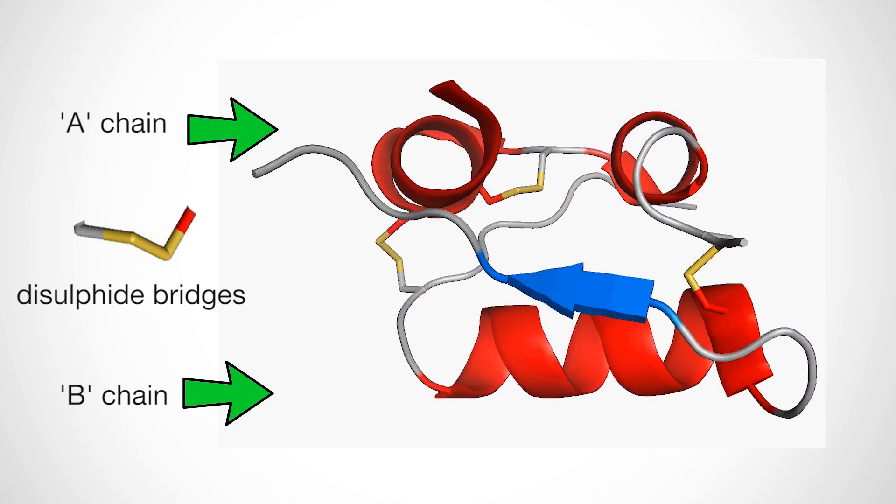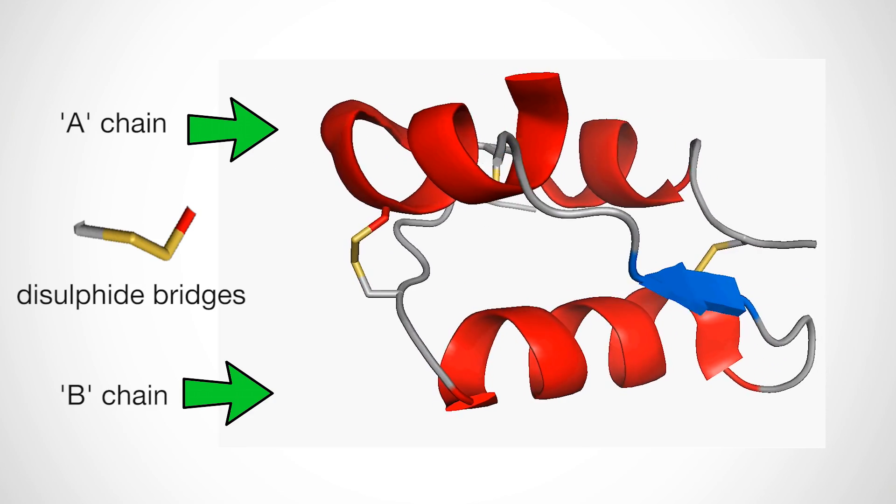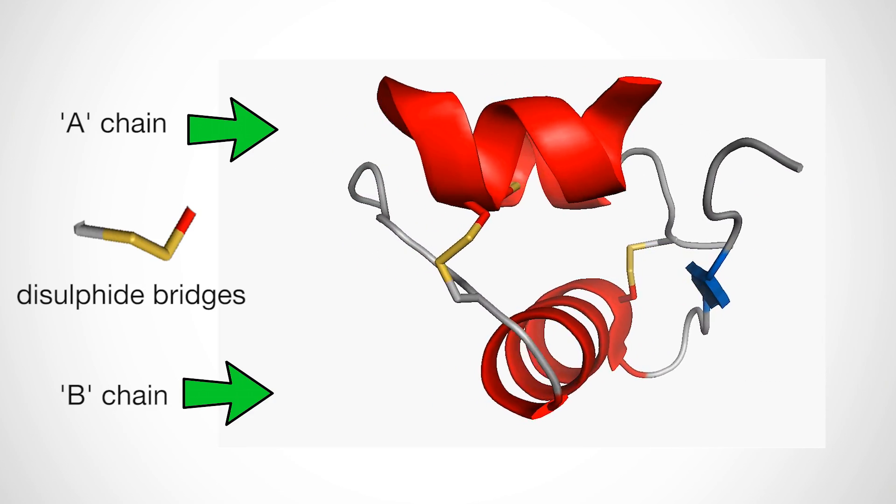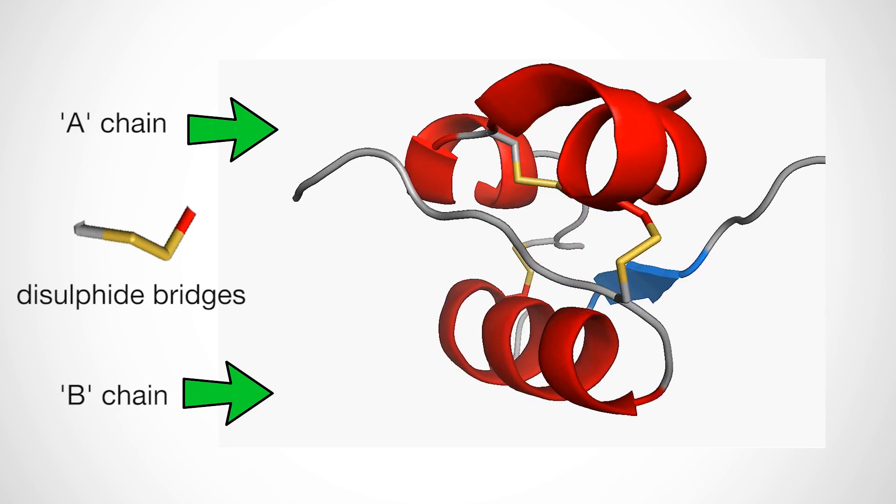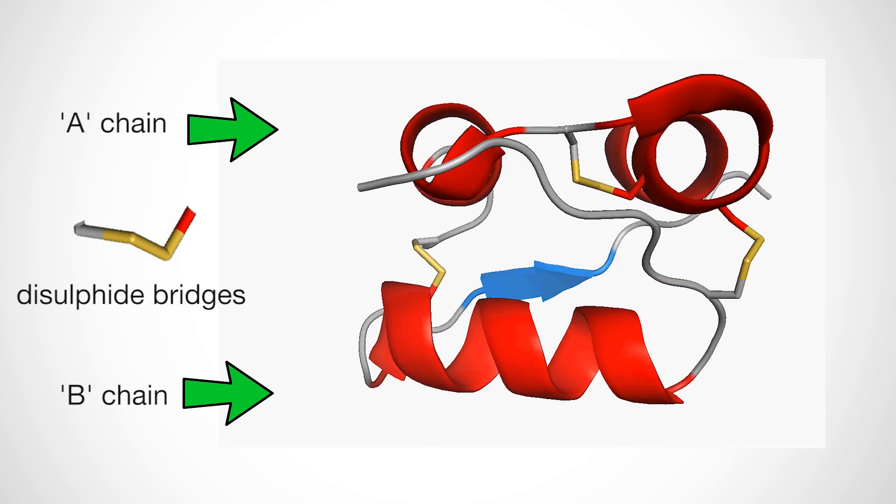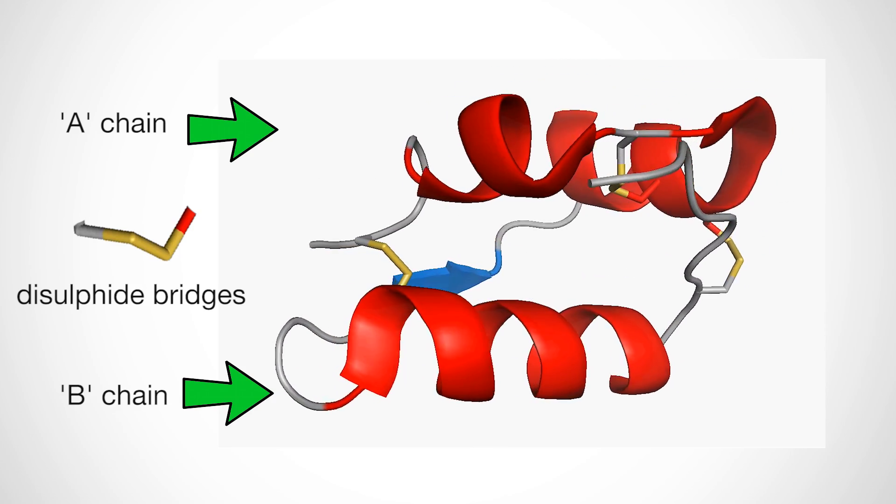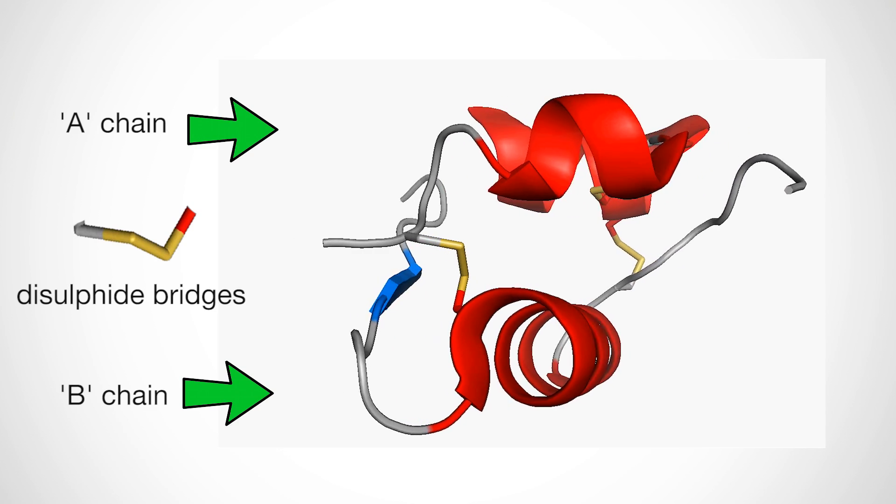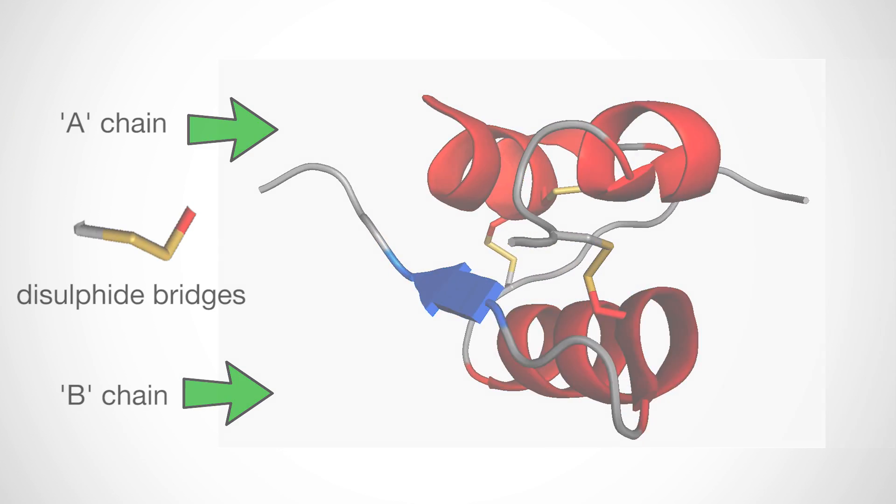The A chain is composed of 21 amino acids with two short segments of an alpha helix structure and a random coil. The B chain is made up of 30 amino acids with a long alpha helix and a shorter random coil.